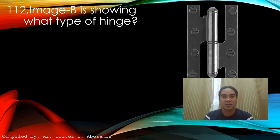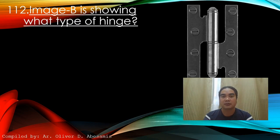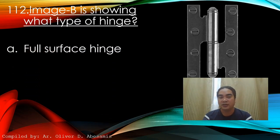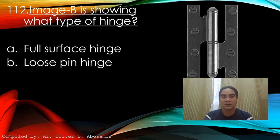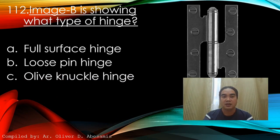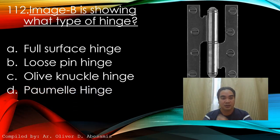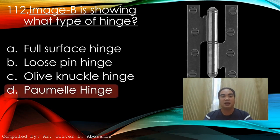Question 112: Check the image. The image is showing what type of hinge? A) Full surface hinge, B) Loose pin hinge, C) Olive knuckle hinge, D) Pomel hinge. Answer: D) Pomel hinge.